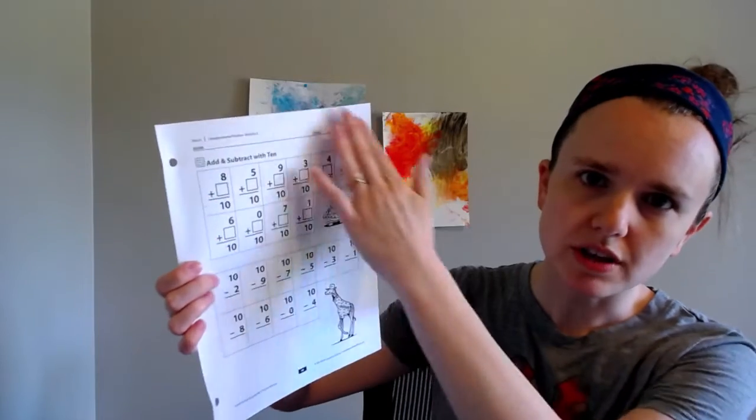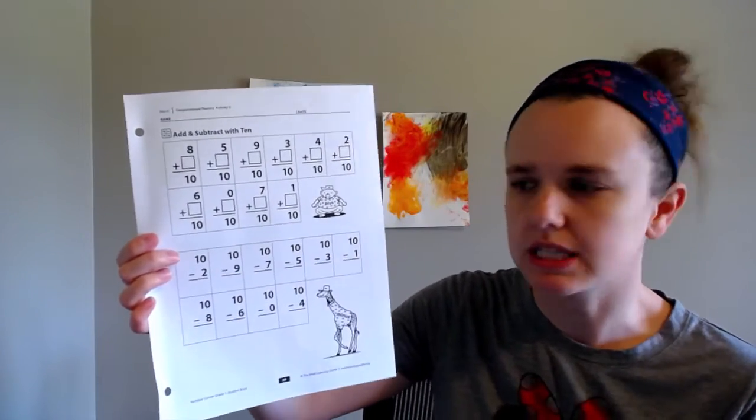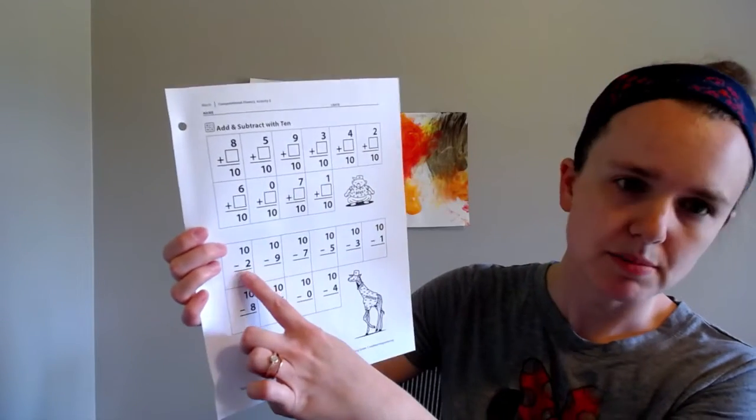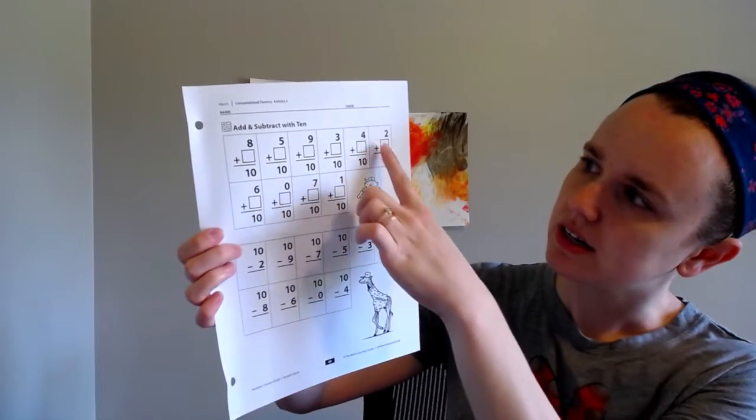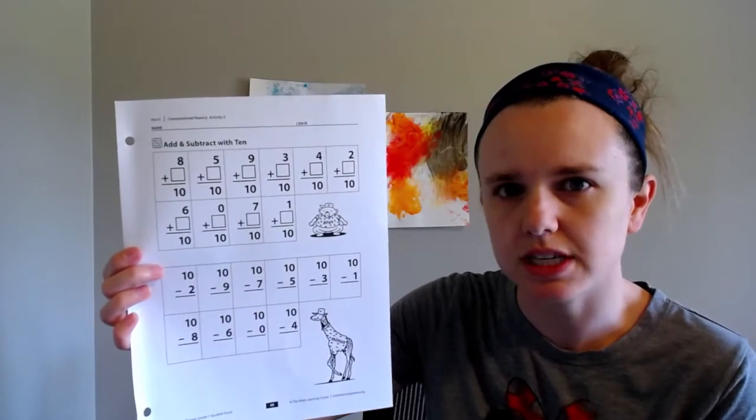You should be able to use all the information that you have up here to help you solve these problems down below because the same numbers, the same number that goes with 2 up here, there it is, is gonna go with 2 down here. They always go together to make 10.